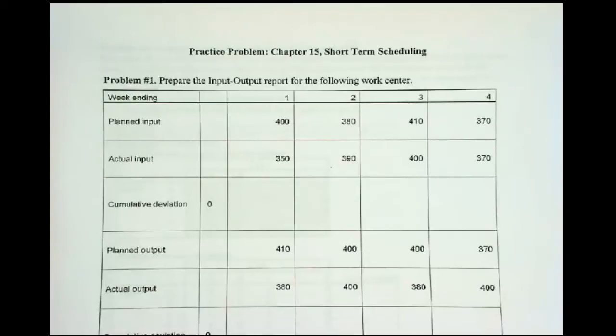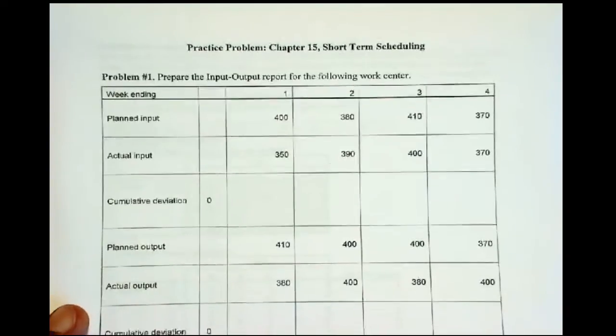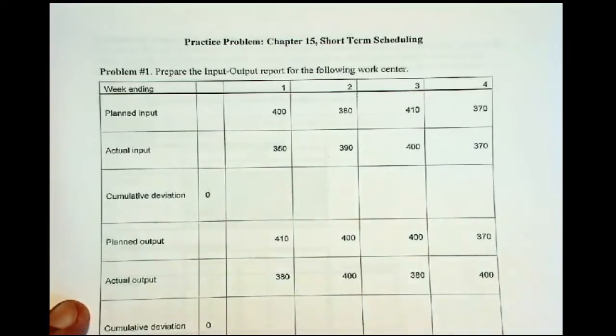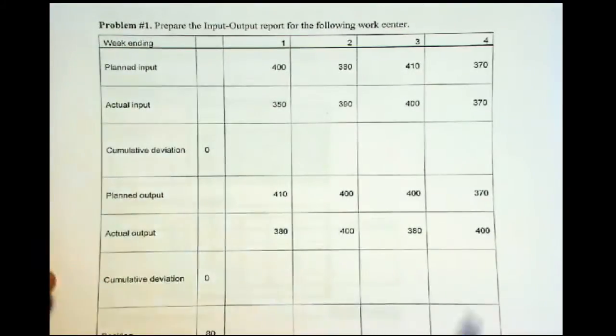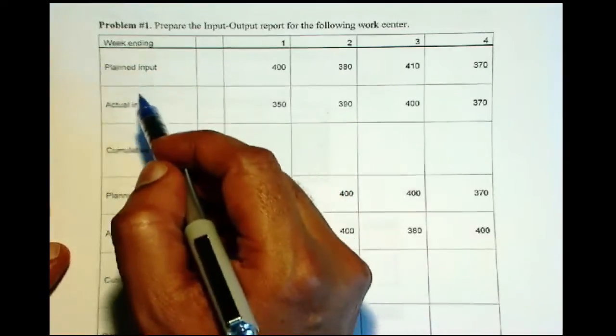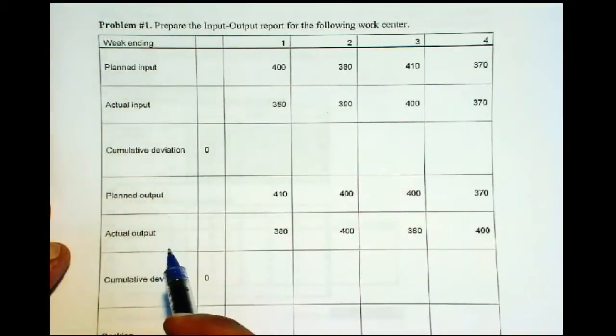Now let's look at an example of input-output control. So input-output control is a rolling chart of input, planned input and actual input, planned output and actual output.